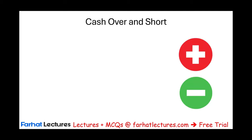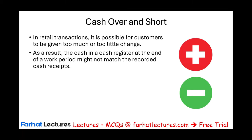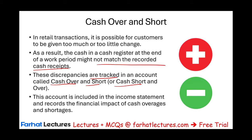We need to discuss cash over and short, which can happen when handling cash and giving change. In retail transactions, customers may be given too much or too little change. As a result, the cash in the register at the end of the work period may not match the recorded cash receipts. These discrepancies are tracked through an account called 'cash over and short.' This account appears on the income statement — it's a revenue account when you have more cash than expected, and an expense account when you have a shortage.